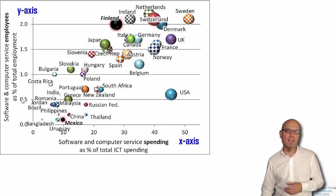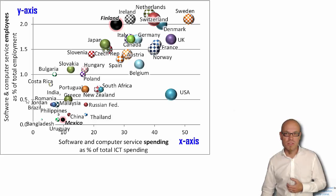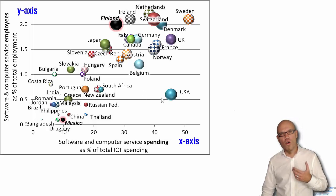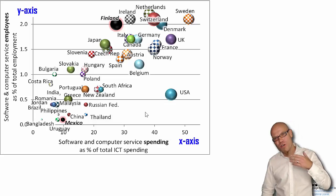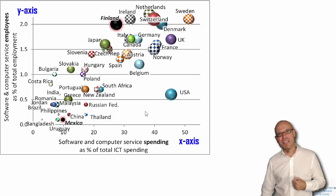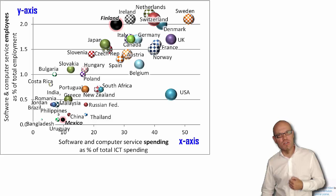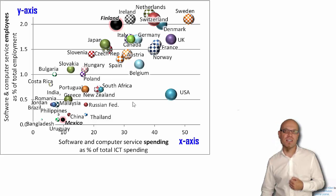In the US, half a percent of total employment works in the software and computer service industry. So now that we know a little bit more about it, let's see what we can read with regard to the distribution of the different countries in this graph.